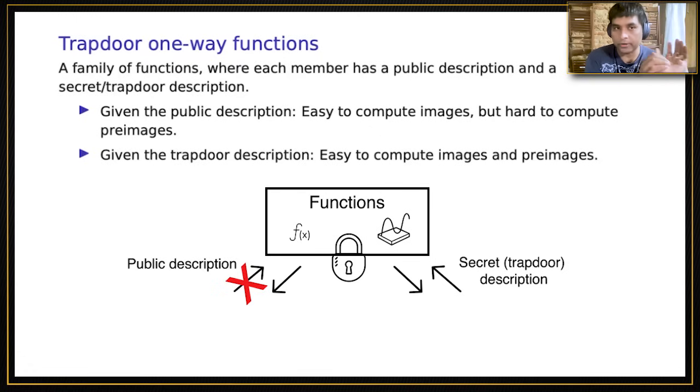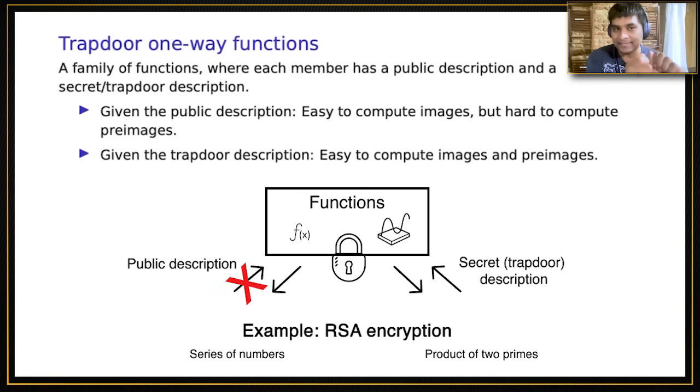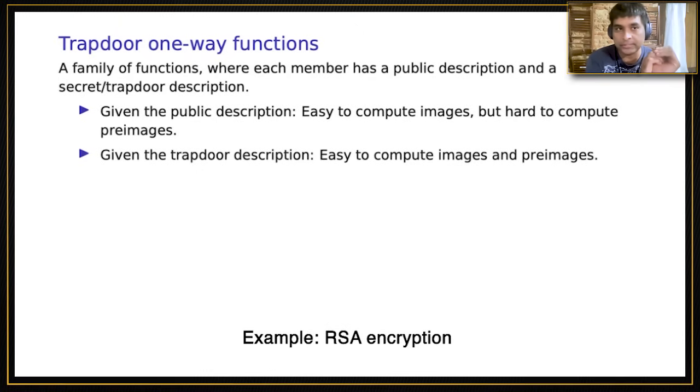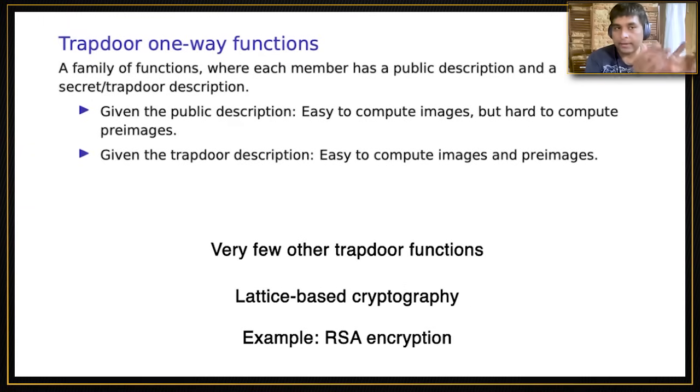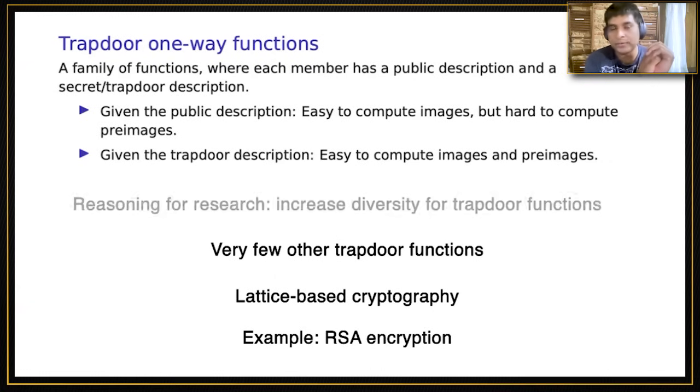Trapdoor one-way functions are an important cryptographic primitive. Perhaps the most famous one is the one that underlies RSA signatures and encryption schemes. In the public description, you have a bunch of numbers, and in the trapdoor or secret description, one of those numbers is written as a product of two primes. These have been around since the dawn of cryptography, but there are still precious few of them. My intent was to try to find a little more diversity in the landscape of trapdoor one-way functions, and I look to tensors.